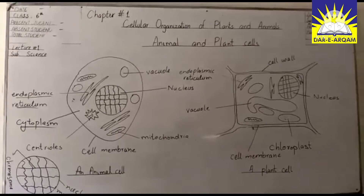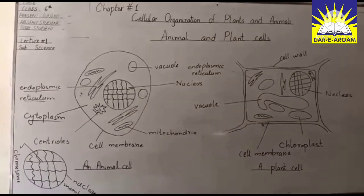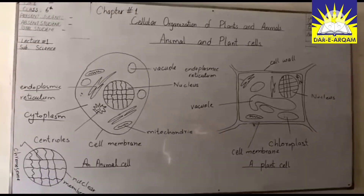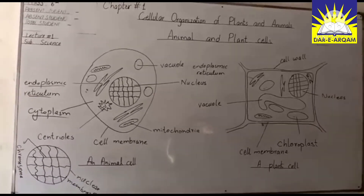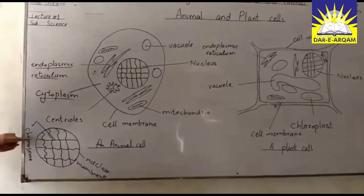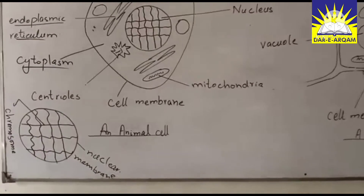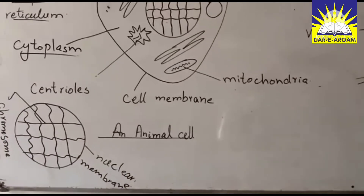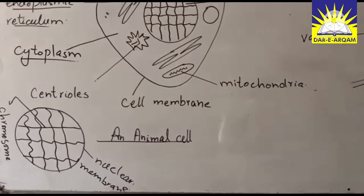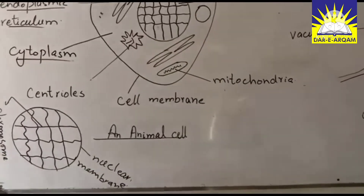Centrioles are present in animal cells and absent in plant cells. If we talk about chromosomes, the chromosome is a structure found in the nucleus. There is a thin membrane around the nucleus known as the nuclear membrane. If you have any problem with this video, you can replay it.